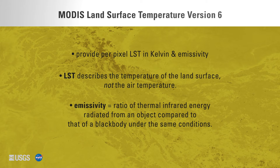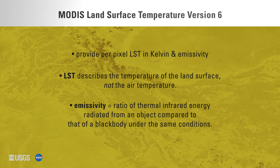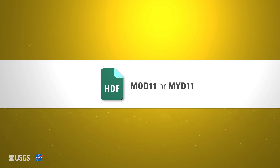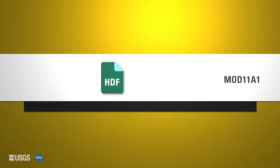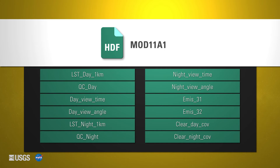All of the land surface temperature products are derived from the initial five-minute level 2 swath products MOD11_L2 and MYD11_L2. MODIS land surface temperature products are distributed as Hierarchical Data Format, or HDF, files. The file name contains MOD11 indicating Terra MODIS observations, or MYD11 for Aqua MODIS observations. A single Terra MODIS version 6 daily land surface temperature and emissivity 1-kilometer level 3 gridded product (MOD11A1) HDF file contains daytime and nighttime LST data, quality information, observation information, emissivity data, and clear sky coverage.